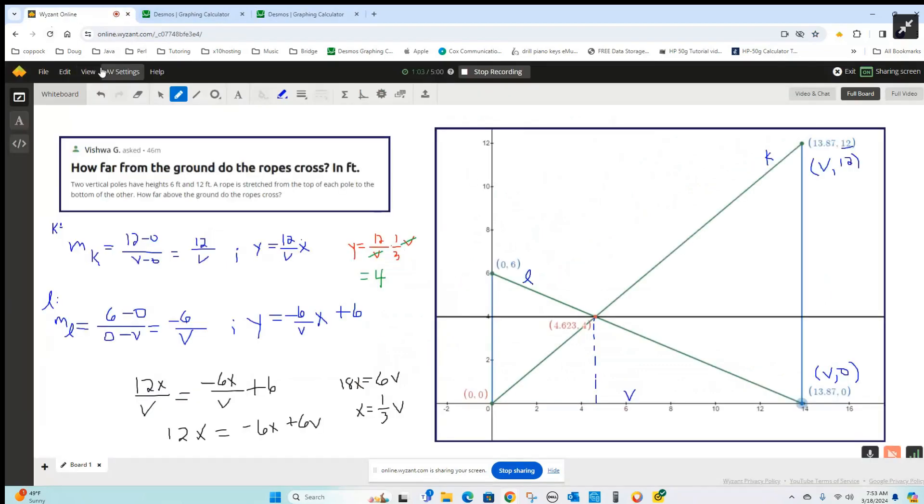Question is how can we show that? Well, if we could find the equations of these two green segments, or the lines passing through them, and then find the point of intersection, we could find out the y-coordinate of the point of intersection. So I'll call this line K and this line L.